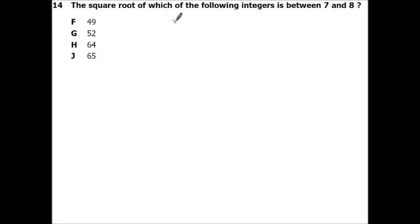Alright, the square root of which of the following integers is between 7 and 8. So we should know that 7 squared is 49 and 8 squared is 64. So all you've got to do is pick the number that's between both of those. So it's not that one. 64 is too much. 65 is too much. So it's got to be G.